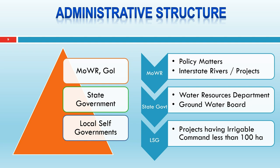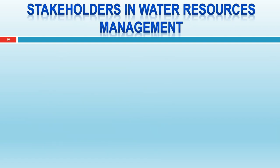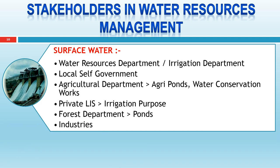At the second level, state governments manage most water, with two arms: the water resources department and the groundwater board, managing surface water and groundwater respectively. We also have local self-government — irrigation projects with an irrigable command area less than 100 hectares are managed by local self-government, meaning Panchayati Raj institutions have a role in water management. We have a three-tier structure with specific roles at each level. For surface water, the water resources department, agricultural department, private lift irrigation schemes, forest department, and industries and hydropower are key stakeholders. Groundwater is regulated by central and state groundwater boards, while the actual users are private individuals using open wells or bore wells.